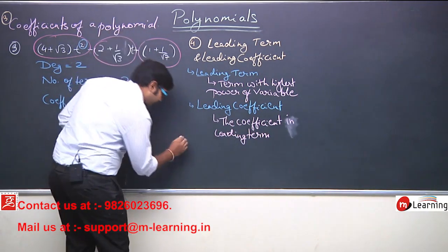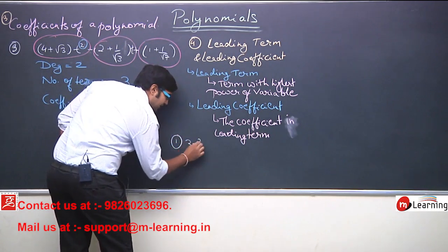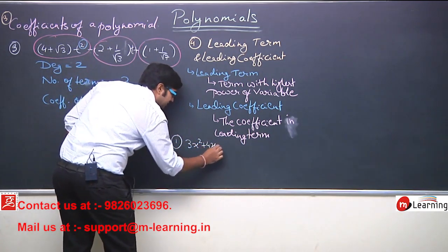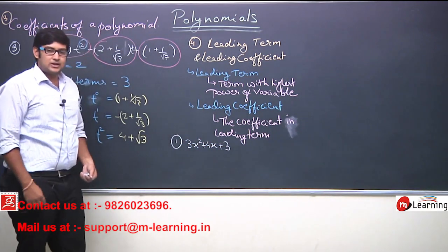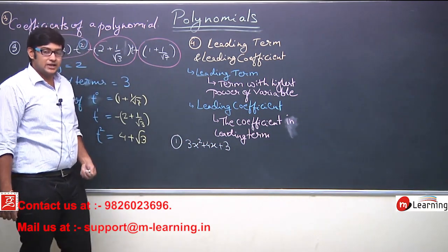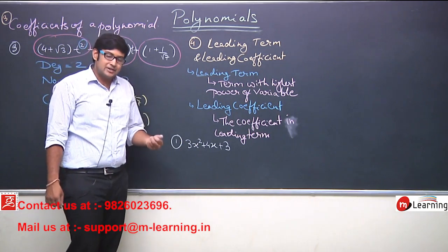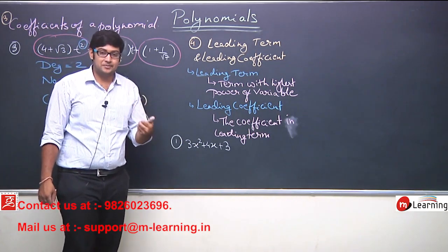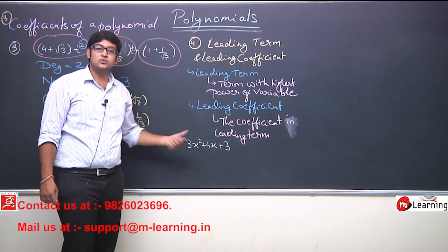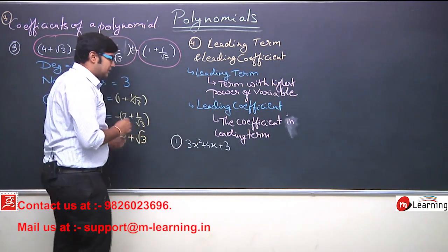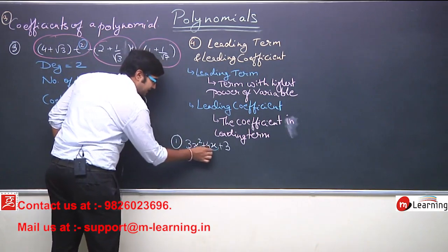For example, if I write 3x² + 4x + 3. This is a polynomial. Is polynomial ki degree kya hai? Is polynomial ki degree hai 2. Degree matlab highest power of variable. यहाँ पे variable की highest power कौन सी है? 2. So, हमें दिखा रहा है — यहाँ पे three terms हैं. This is the first term. This is the second term.